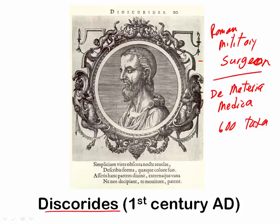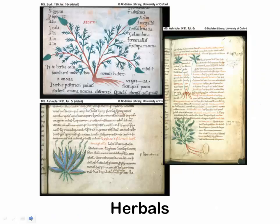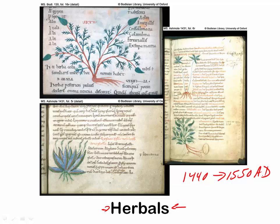Dioscorides' work was utilitarian, and the herbalists who followed him in the Middle Ages also produced utilitarian works — they were only interested in plants insofar as they provided herbal medicines. Herbals written in Latin included illustrations and descriptions of plants along with their medicinal properties. The herbalists worked from about 1440 to about 1550 AD, a gap of some 1,300 years after Dioscorides.